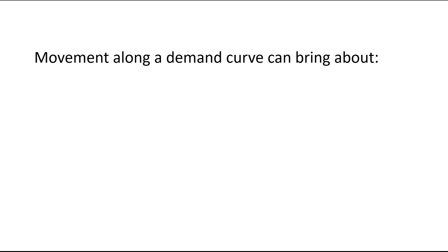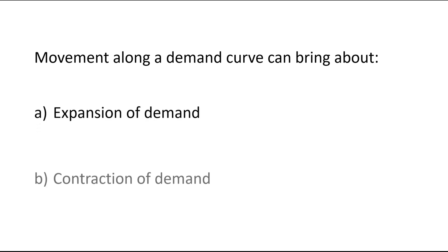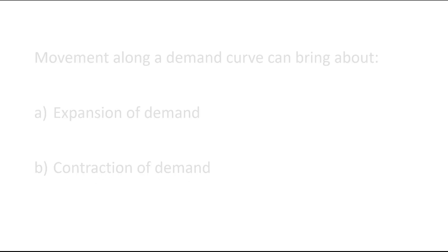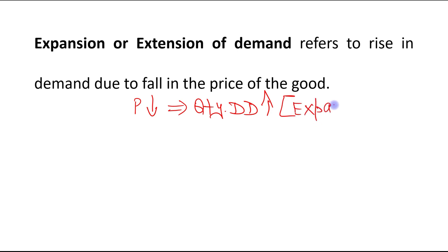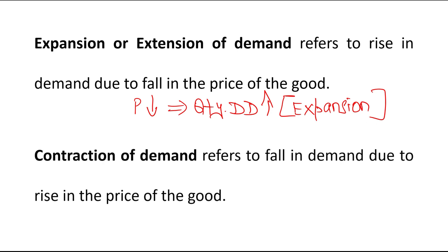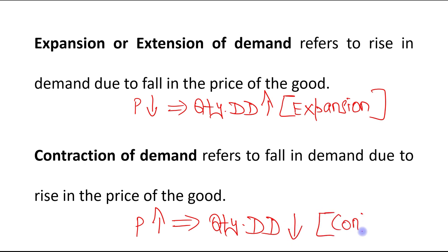Movement along the demand curve can bring about expansion of demand and contraction of demand. Expansion or extension of demand refers to a rise in demand due to a fall in price of the good — when price falls, quantity demanded increases. Contraction of demand refers to a fall in demand due to a rise in price of the good — when price rises, quantity demanded falls.